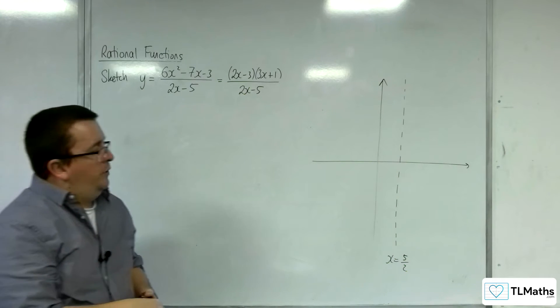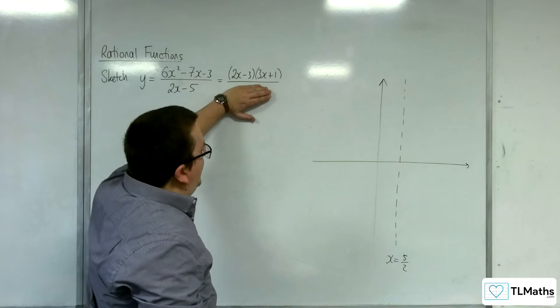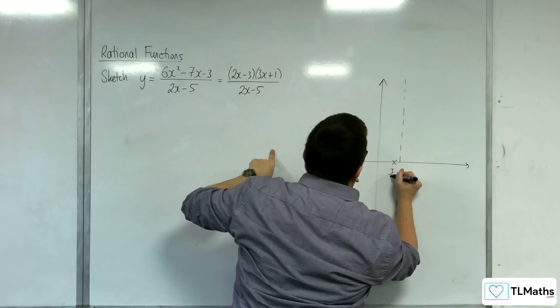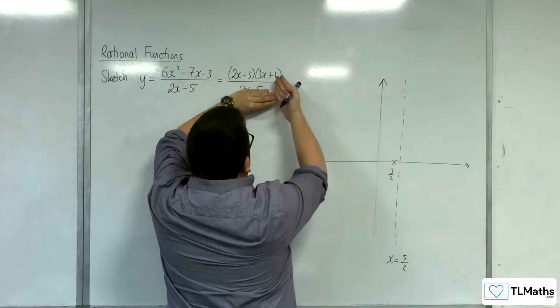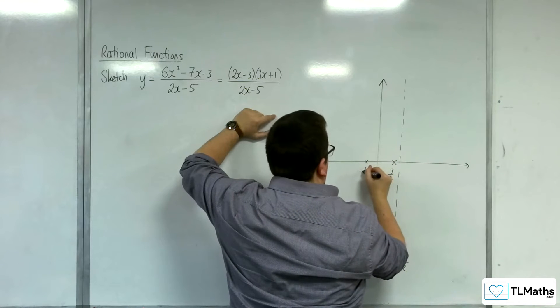How about where it crosses the x-axis? That's when the numerator is 0, so that would be at 3/2 and -1/3.